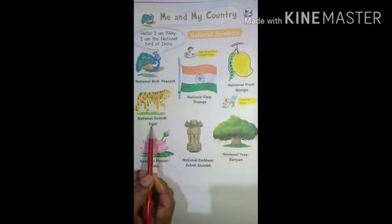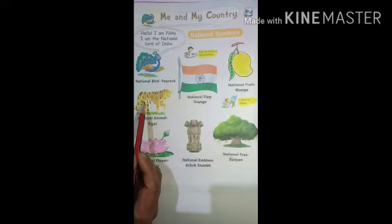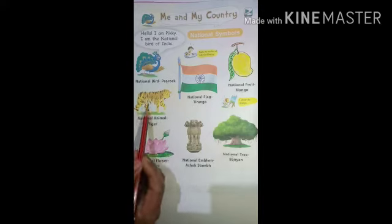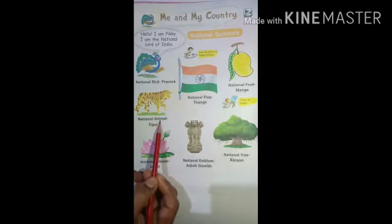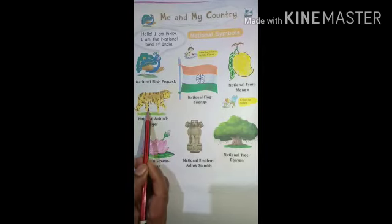National animal — tiger. Tiger is our national animal. He lives in forest and also in some zoo. Ye kya hai? Tiger hai. Rastriya prani kya hai? Tiger.